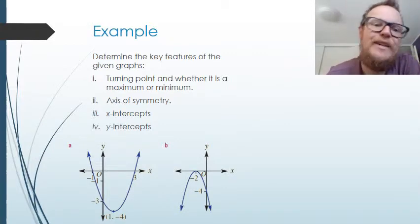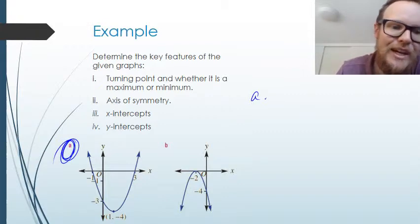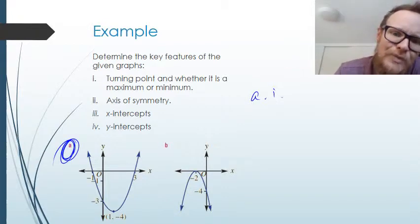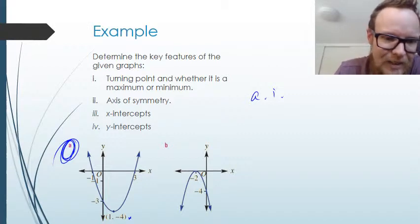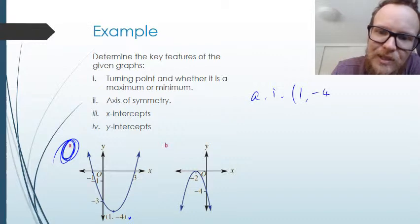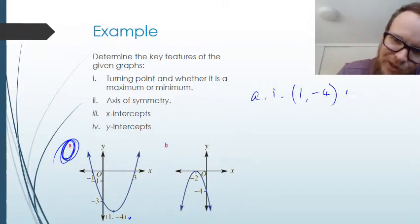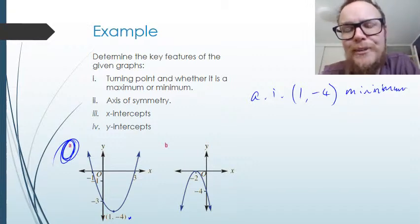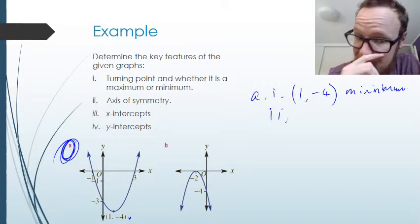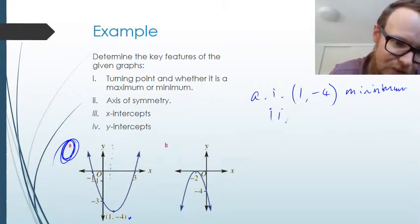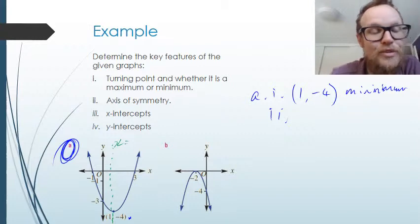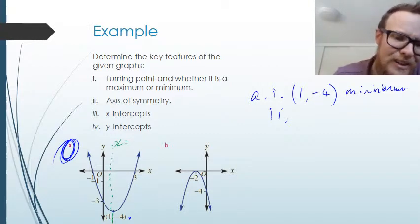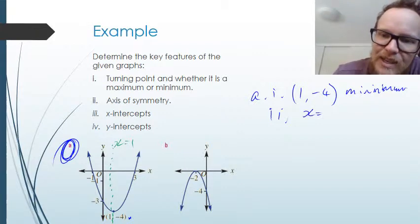Let's have a look at some examples identifying key features of these graphs. For graph A, we're asked: what is the turning point, and is it a maximum or minimum? The turning point is neatly labeled on the graph where it turns around, and we can see it's a minimum value. For the axis of symmetry, we draw a vertical line through the turning point — the X value at the turning point is 1, so the axis of symmetry is X equals 1.